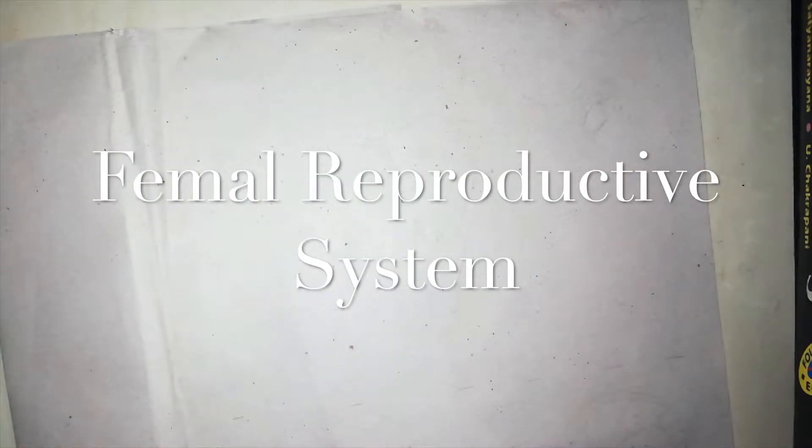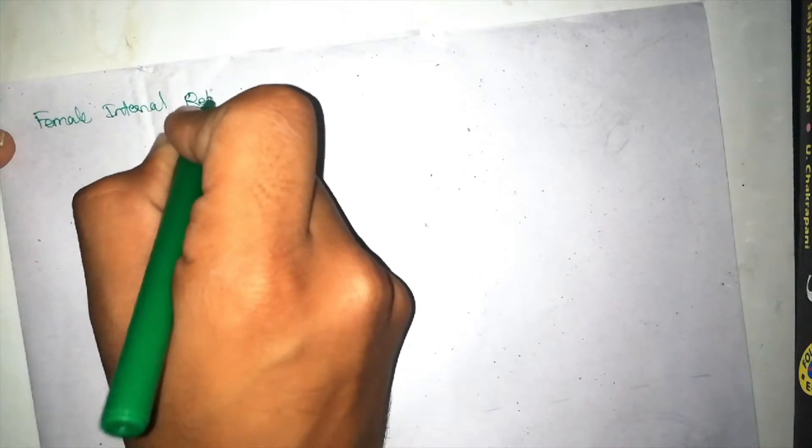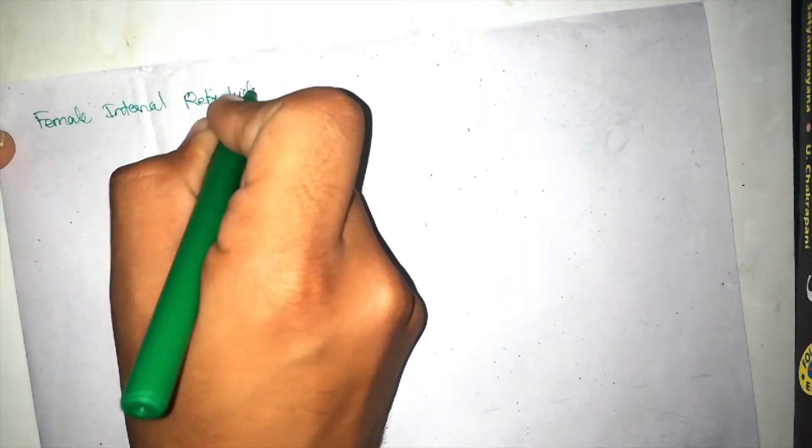Let's talk about the female reproductive system. My name is Khalees Shweer Khan. Today I'm going to make a video about the female reproductive system. The female reproductive system includes both external genitalia and internal genital organs. Today we are going to talk about the female internal genital organs or reproductive organs.